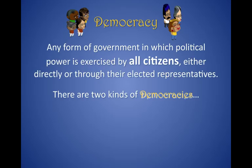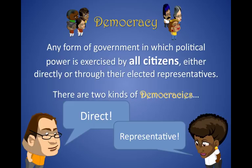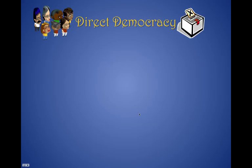Let's talk about the first form of government: democracy. In a democracy, it's a form of government in which political power is exercised by all citizens, either directly or through their elected representatives. There are two kinds of democracies: direct democracy and representative democracy. Under democracy on your chart, there are two boxes — you're going to write "direct" and you're going to write "representative" in those boxes.